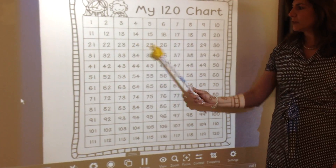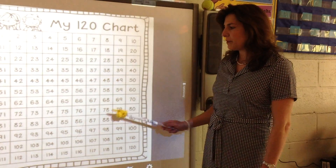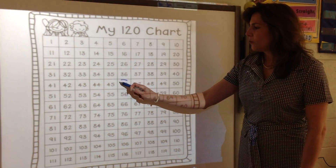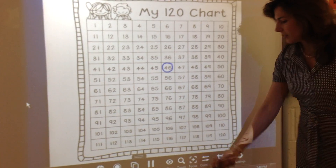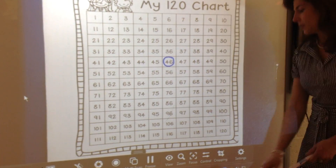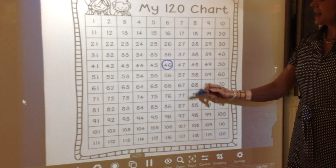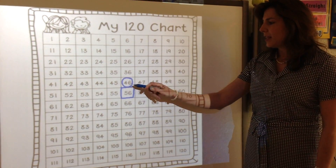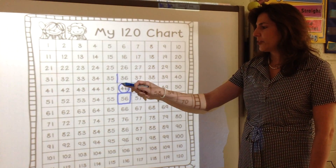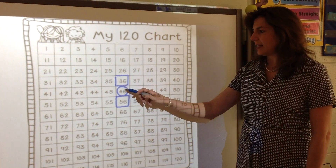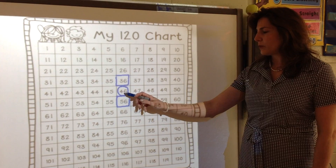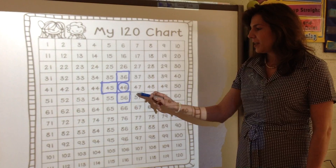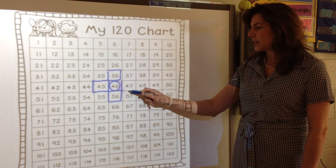Once the children have recognized this pattern and are familiar with it, we will be able to count 1 more, 1 less, 10 more, 10 less. So I circle number 46 and I ask: what is 10 more? We go below — 10 more is 56. And 10 less would be 36, there are only 3 tens. 1 less than 46, we move in the row — 1 less is 45.